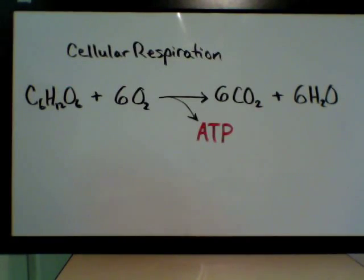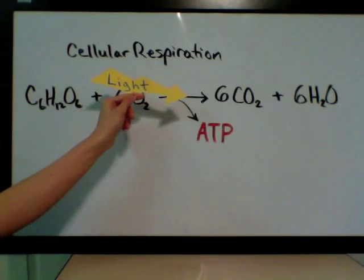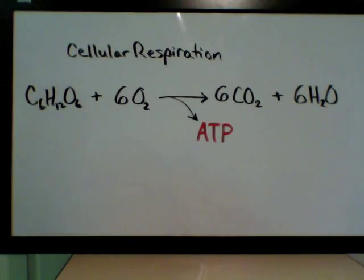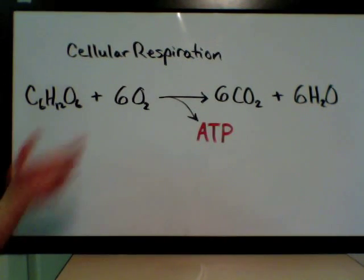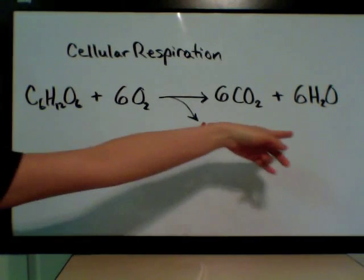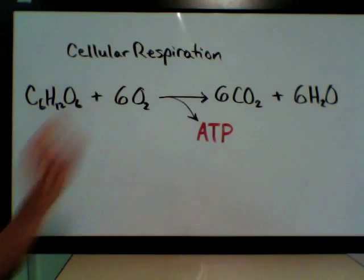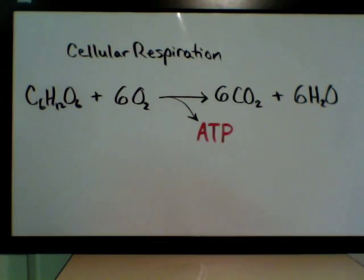Photosynthesis is a way for plants to store energy in the form of starch, while cellular respiration is a way for our cells to extract that stored energy. As you would expect, the chemical equation is the reverse of photosynthesis, except that the energy going into photosynthesis is light energy and the energy coming out of cellular respiration is chemical energy in the form of ATP. Instead of an input of photons, we have an output of ATP — sometimes shown in brackets, sometimes as "plus energy" on that side of the equation.